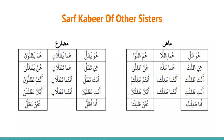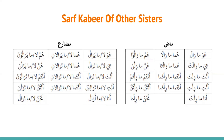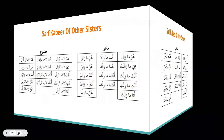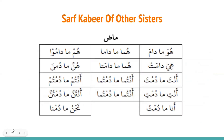Now some other sisters. Dhalla — past tense: huwa dhalla, huma dhalla, hum dhallu, hiya dhallat, huma dhallata, hunna dhallilna, anta dhallilta, antuma dhalliltuma, antum dhalliltum, anti dhallilti, antuma dhalliltuma, antunna dhalliltunna, ana dhalliltu, nahnu dhallilna. Present tense: huwa yadhullu, huma yadhallani, hum yadhalluna, hiya tadhullu, huma tadhallani, hunna yadhalluna. Then we have ma dhalla and ma dama — past tense, present tense. These are conjugations for some common af'al naqisa.